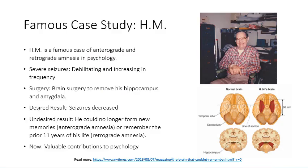One famous case study mentioned in your book is that of H.M. He had many debilitating seizures that prevented him from functioning, so surgeons removed the parts of the brain from which seizures were emanating — specifically his hippocampus and amygdala. The seizures decreased, but the undesired result was that he could no longer form new memories, called anterograde amnesia. He also couldn't remember the previous 11 years of his life — retrograde amnesia. His case became a valuable contribution to psychology, teaching us much about the functions of different brain regions.